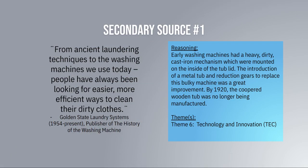For our first secondary source, we have a quote from the Golden State Laundry Systems, publisher of 'The History of the Washing Machine.' From ancient laundering techniques to the washing machines we use today, people have always been looking for easier, more efficient ways to clean their dirty clothes. Early washing machines had a dirty cast iron mechanism mounted on the inside of the tub lid. The introduction of a metal tub lid with reduction gears to replace this bulky machine was a great improvement. By 1920, the copper wooden tub was no longer being manufactured. We found this to be under Theme 6: Technology and Innovation.